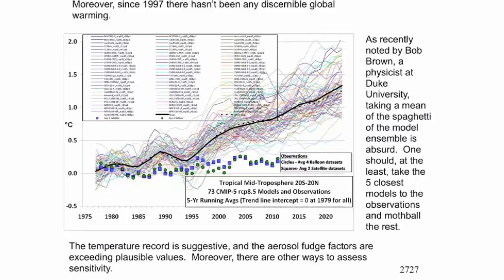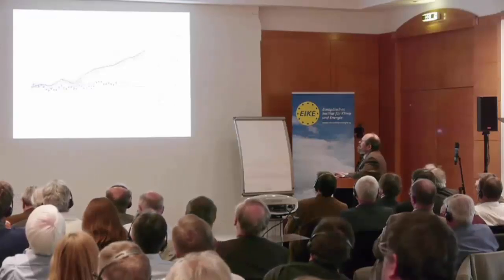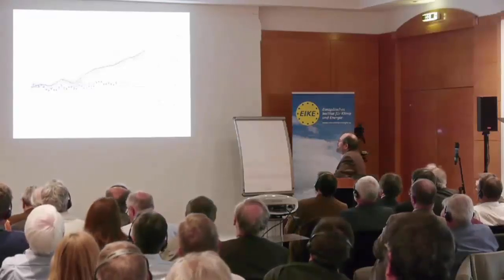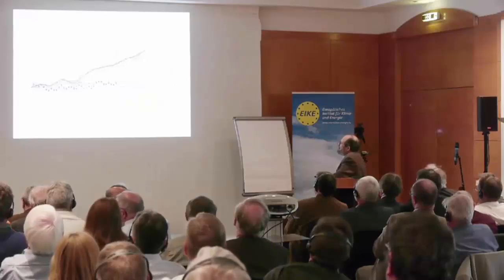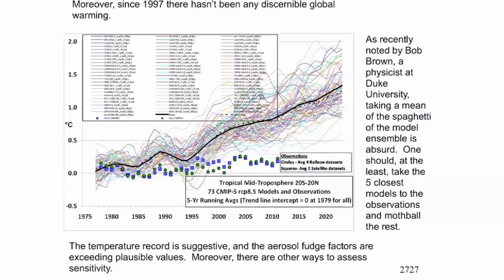At this meeting, and also many other people, made the point that with this spaghetti — the model ensemble — to use the average of the model ensemble as the IPCC does is absurd. If you were an engineer confronted by this, even if you didn't understand the situation, you'd say a few models are at least in range. How do they differ from all the other models? Let's throw away the other models and find out why they did so much worse.